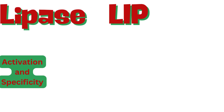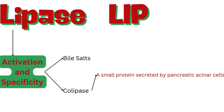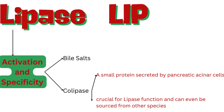For lipase to achieve full catalytic activity, it requires two important elements: bile salts, which are essential for its activation, and colipase — a small protein secreted by pancreatic acinar cells. Colipase is crucial for lipase function and can even be sourced from other species for in-vitro activation, which is a useful property in analytical assays.